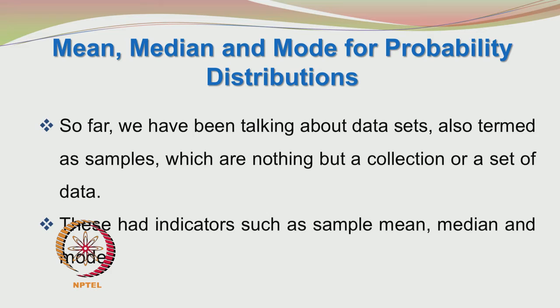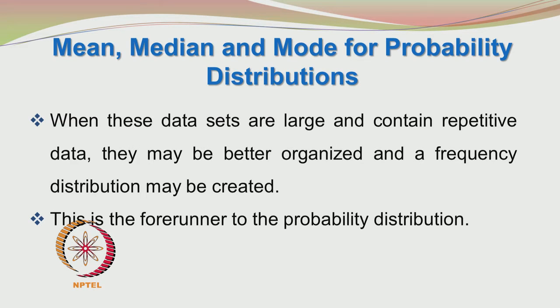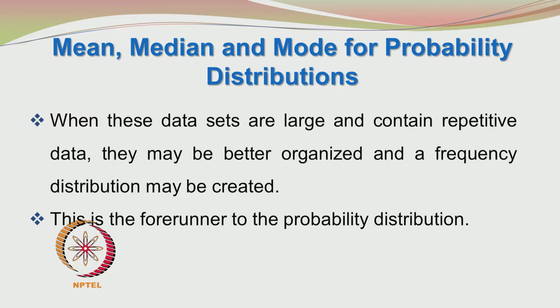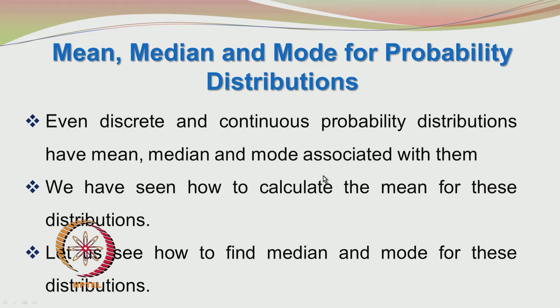So far we have been talking about data sets, also termed as samples, and their features such as sample mean, median and mode. When these data sets are large and contain repetitive data, they may be better organized and a frequency distribution may be created. You might have done this in class 9 and class 10. This is the forerunner to the probability distribution. Both the discrete and continuous probability distributions have mean, median and mode, and we will see how to calculate them.